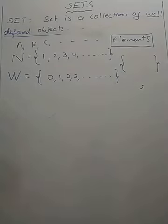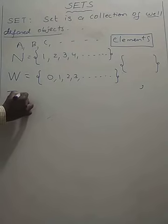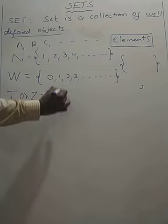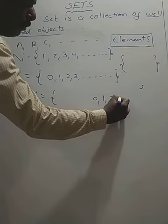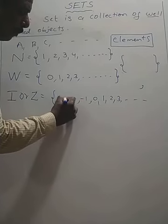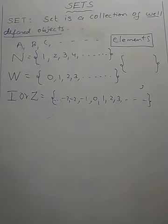Next, the set of integers. The word integer starts with I, so we denote the set of integers by capital I, or also capital Z. This set includes 0, 1, 2, 3, and so on, as well as the negative integers: minus 1, minus 2, minus 3, and so on.